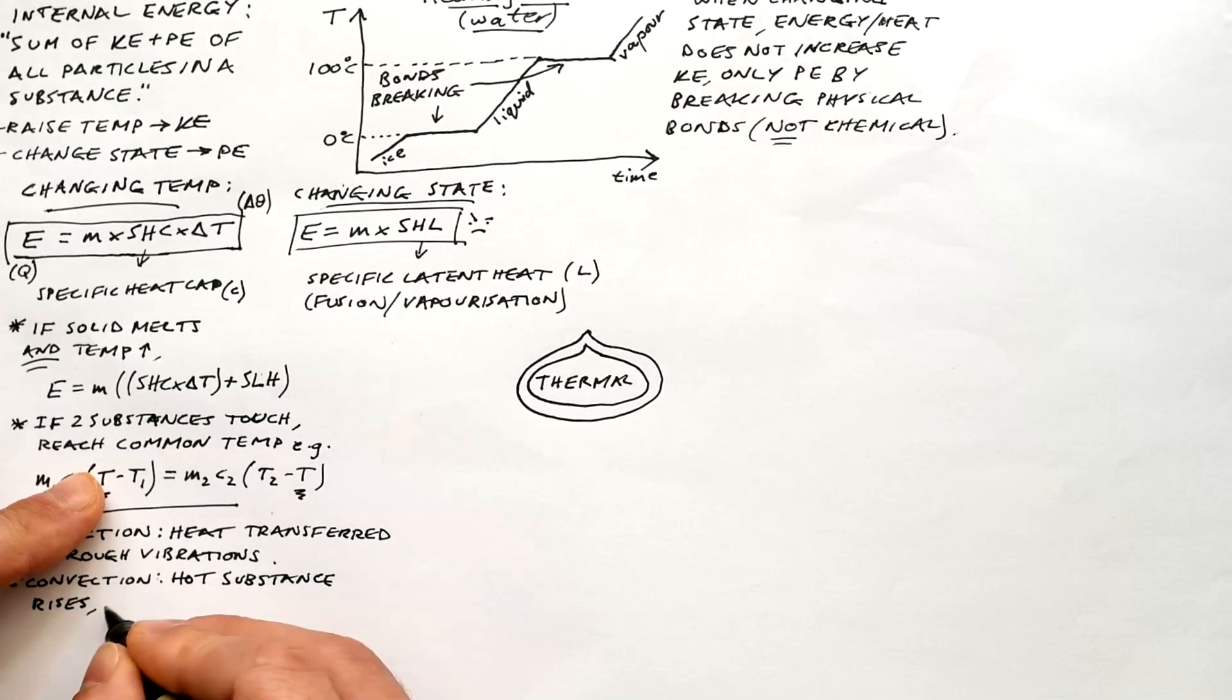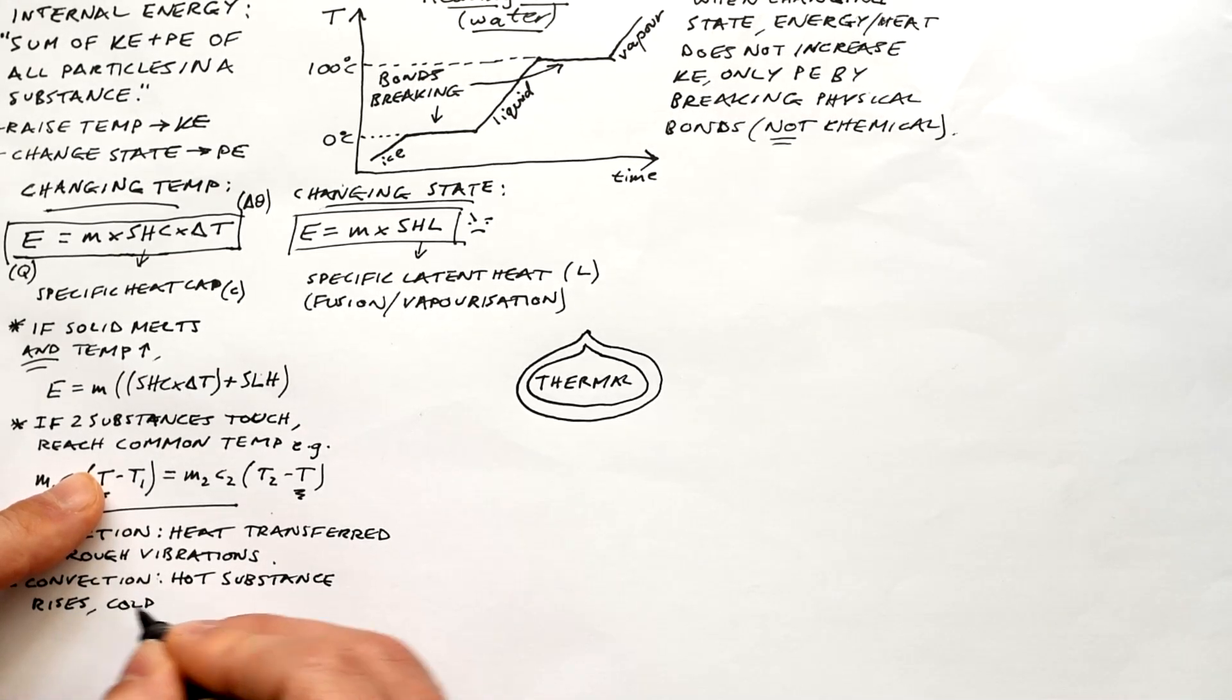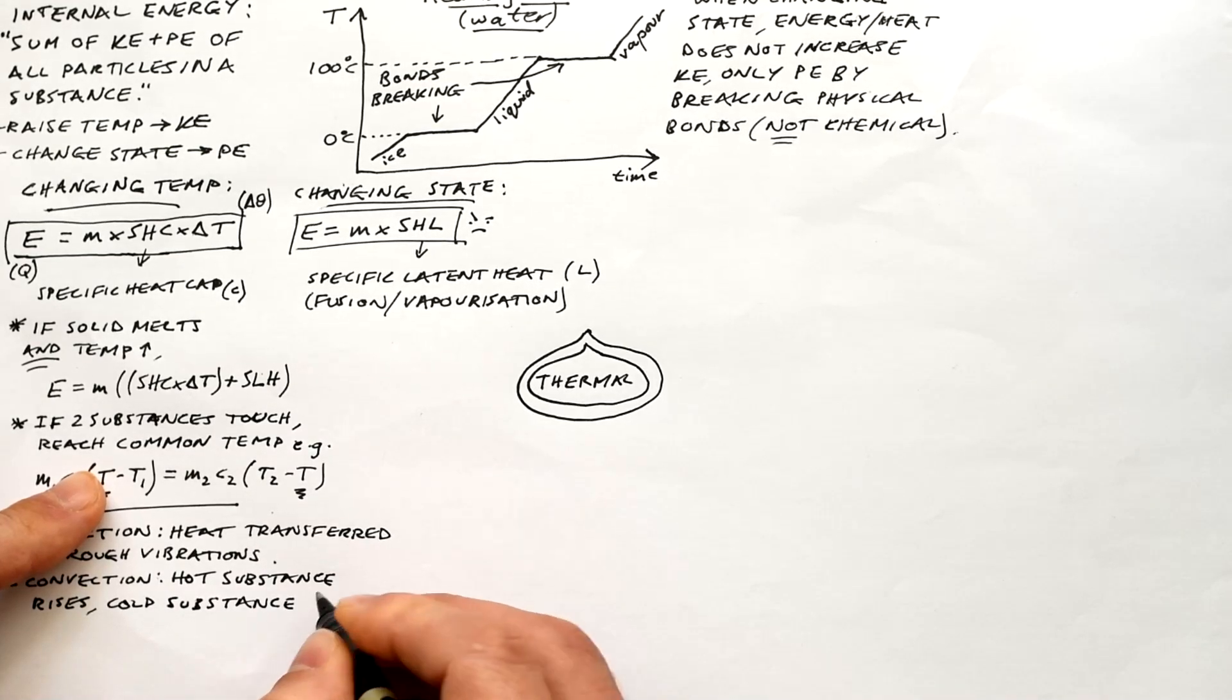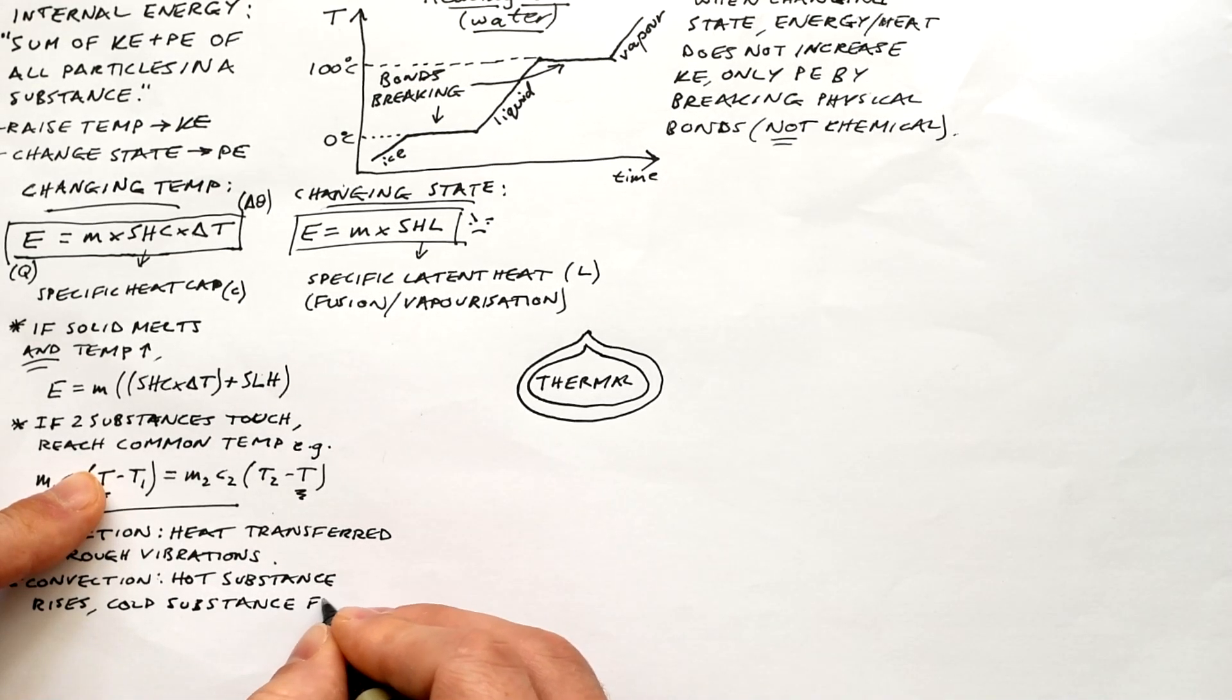Convection, that's for any fluid, that's liquids or gases. Hot portions of a fluid are less dense because the particles are further apart. They're not bigger, they're just further apart. So it rises and cold fluid falls to take its place.